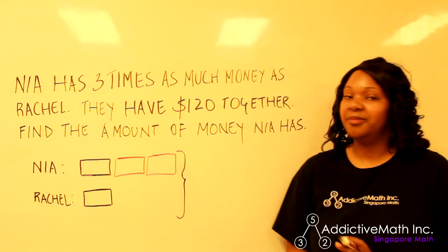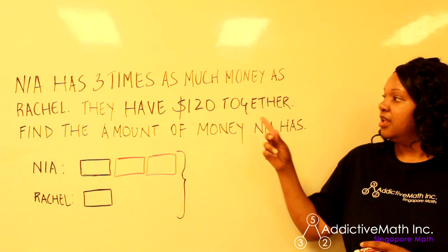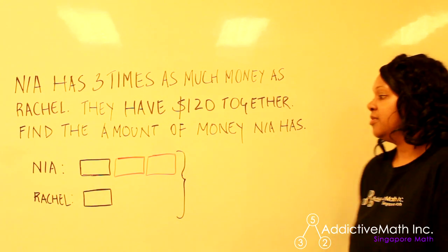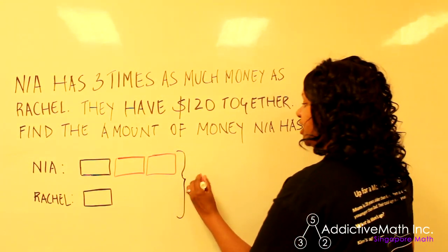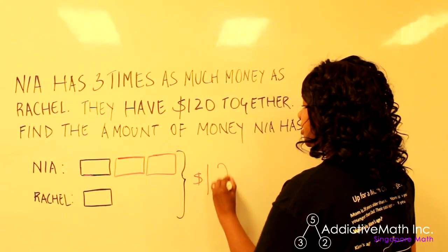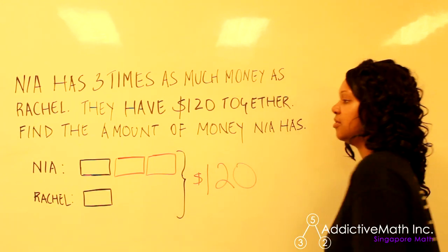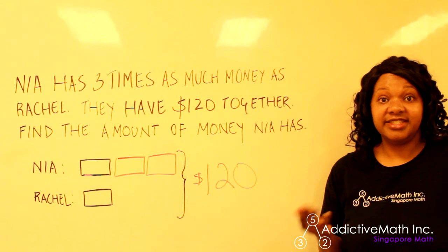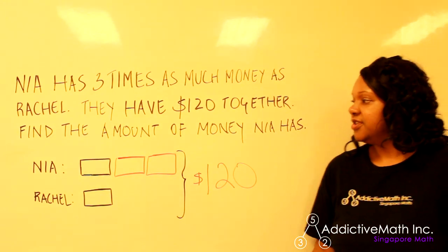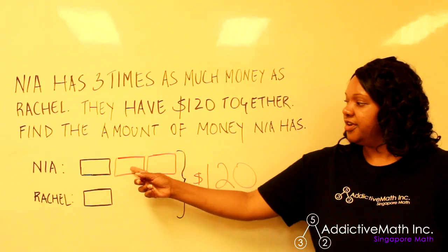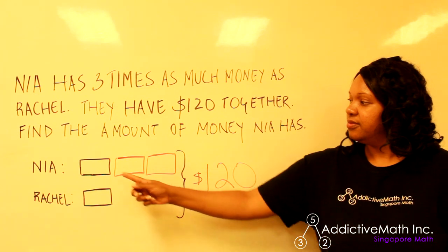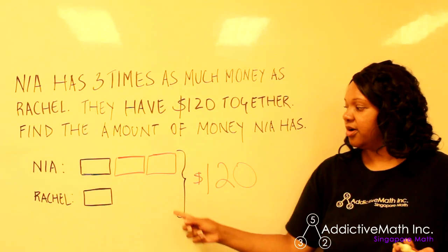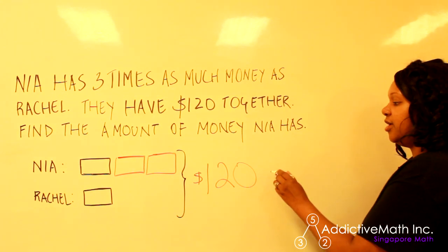It tells us they have $120 together, so that's our total — we write 120 here. Now we need to find out how much money each person has. Since we know there are four bars total — Nia has three and Rachel has one — we're going to take 120 divided by four.